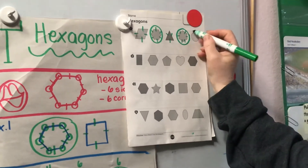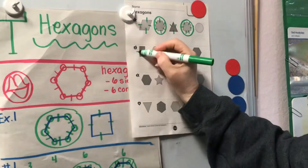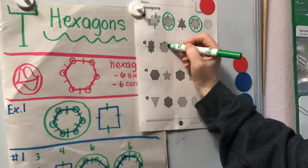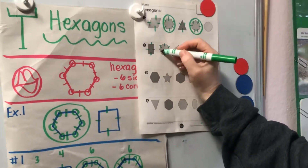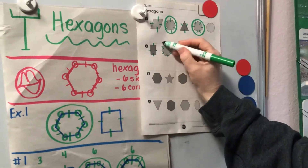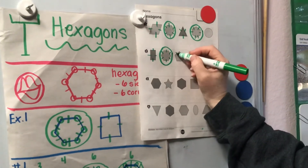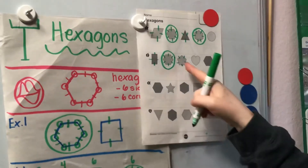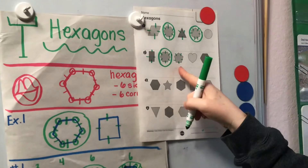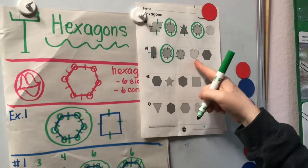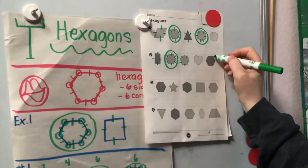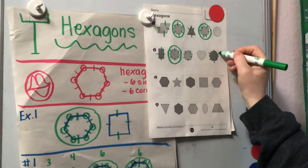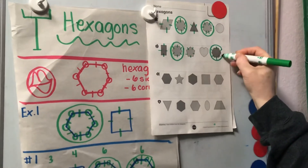Oh! Leave it alone. One, two, three, four. One, two, three, four, five, six — oh! Hexagon! One, two, three, four, five — that's tricky, that's a pentagon. The heart? Oh, no. None. One, two, three, four, five, six — hexagon.